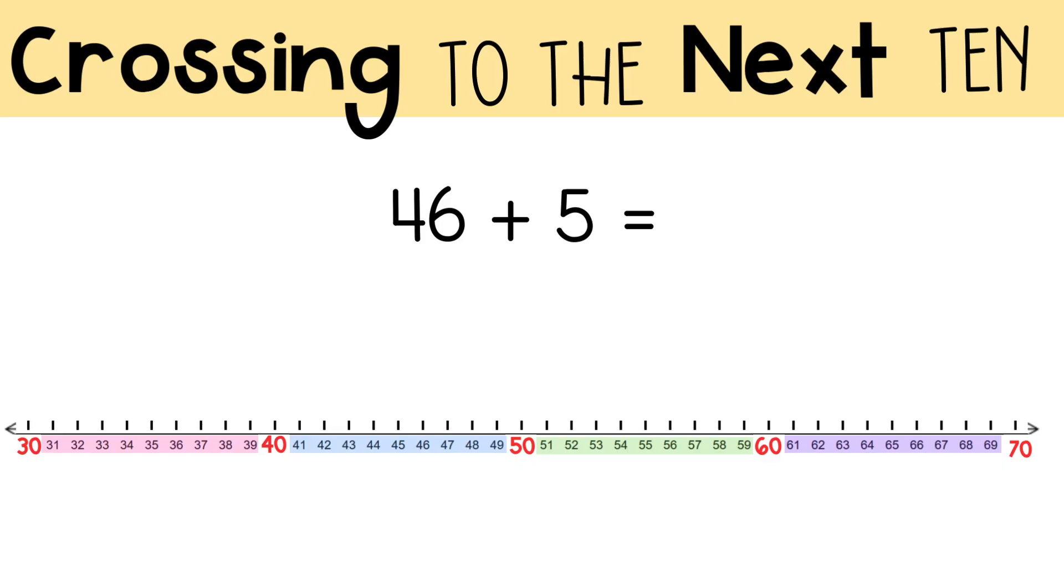Let's try a few more. Here's the problem 46 plus 5. We'll find 46 on the number line. Now, I'll add 4, which will bring me to 50. So, I'm crossing a ten. I was supposed to add 5. I added 4 to get to 50.